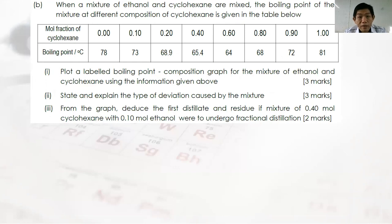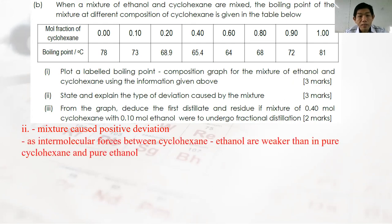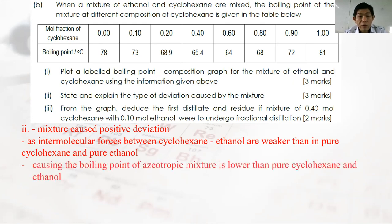Question 2B part 2: State and explain the type of deviation. The mixture shows positive deviation. The intermolecular forces between cyclohexane and ethanol are weaker than between pure cyclohexane and pure ethanol. This causes the boiling point of the azeotropic mixture to be lower than expected, or equivalently the vapor pressure is higher than expected.